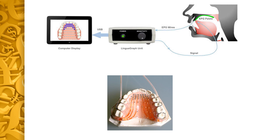Coming to electropalatography, it is a technique used to monitor the contacts between the tongue and the hard palate, particularly during articulation and speech. Here, a custom-made artificial palate is molded to fit against the speaker's hard palate, and this artificial palate contains electrodes exposed to the lingual surface. When contact occurs between the tongue surface and any of the electrodes, particularly between the lateral margins of the tongue and the borders of the hard palate, then electronic signals are sent to the external processing unit.